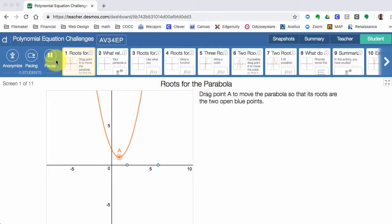So here I am on the very first slide and my first thing I'm supposed to do is drag point A to move the parabola so that its roots are the two open blue points. I want to move this parabola so that it crosses twice right there at 2 and x-intercept of 6. All right, successfully did it, first task done.